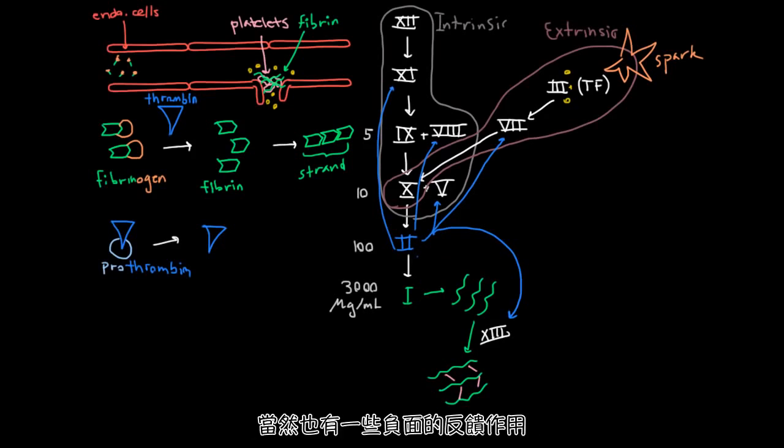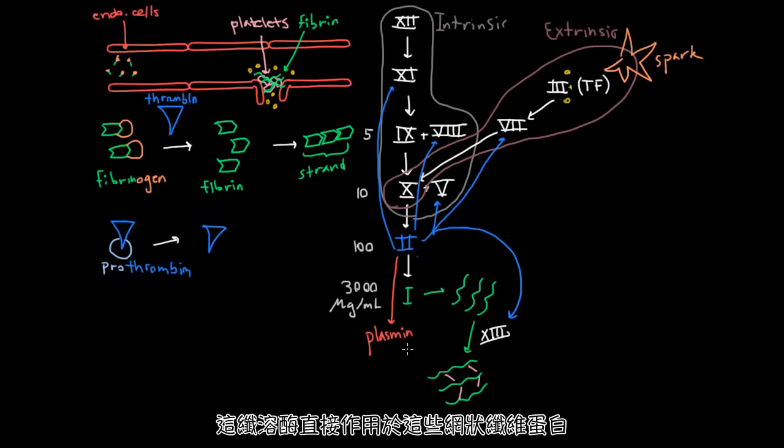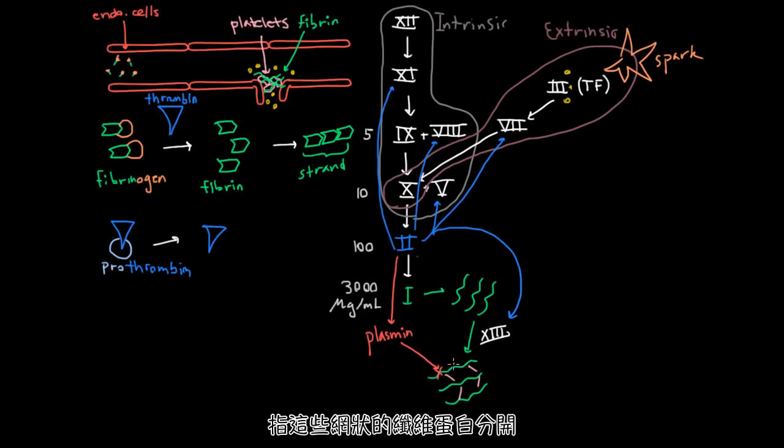So to keep that from happening, there are some negative feedback loops. And like much of the other steps in this picture, they're governed by thrombin. So one thing that happens is that thrombin helps create plasmin from plasminogen, much the way it helps create fibrin from fibrinogen. And this plasmin acts directly on these mesh networks of fibrin and breaks them apart. So that's one helpful factor, but that's not really an example of negative feedback because it won't prevent the continued production of all this.